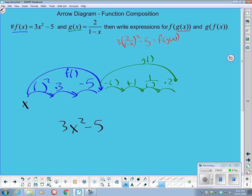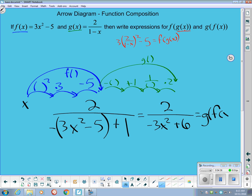I change the sign on that whole thing and add 1 and then reciprocate and multiply by 2. So a little bit of simplifying I can do in the denominator as a negative 3x squared plus 5 plus 1. So negative 3x squared plus 6 in the denominator. And that is g of f of x.